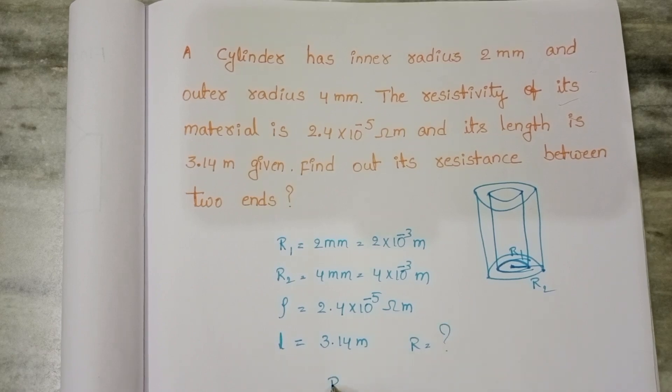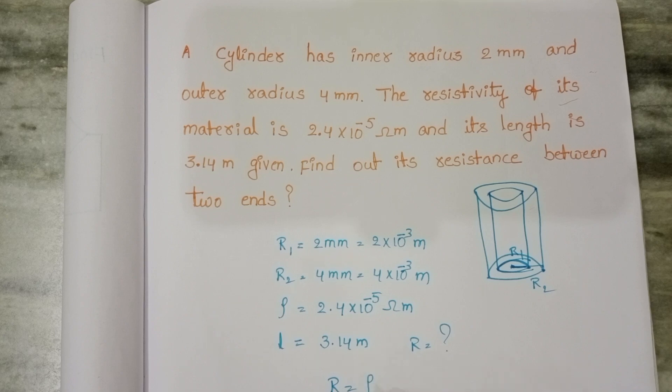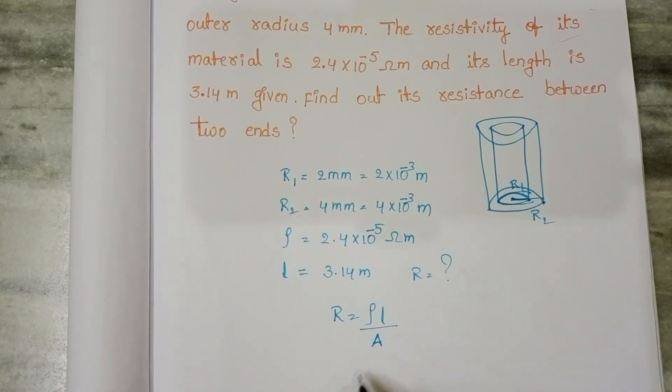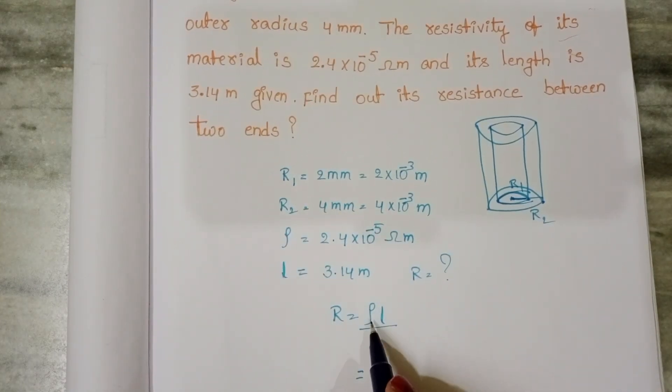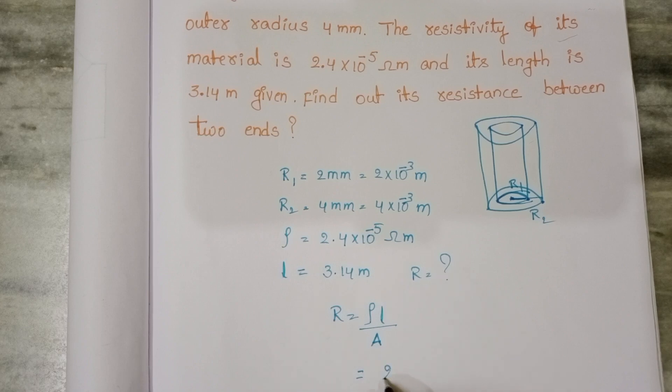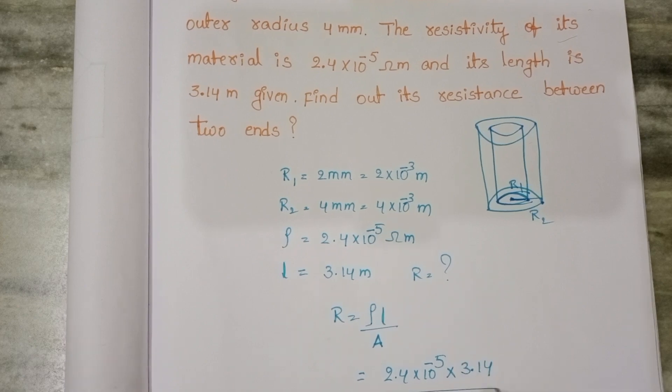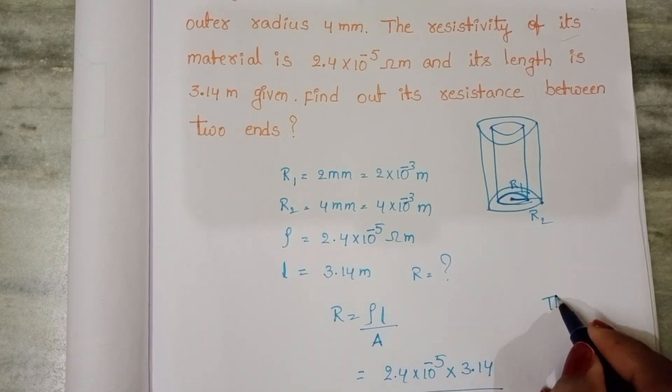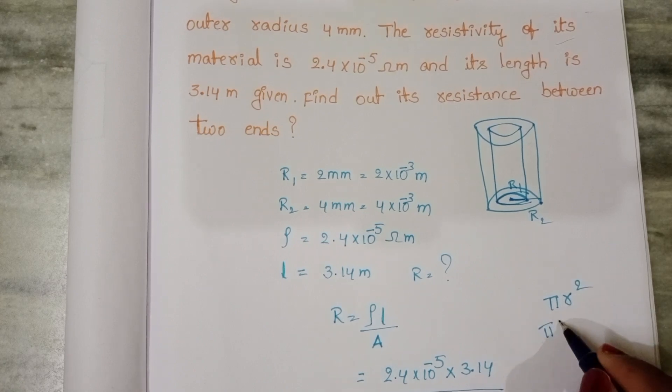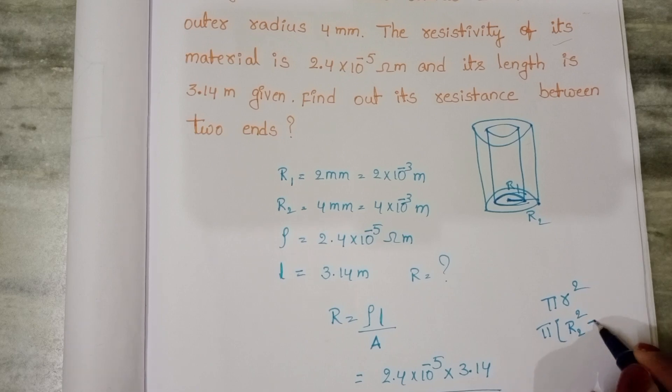We know resistance equals specific resistance times length by area of cross section. Substitute the values: in place of ρ, 2.4 × 10⁻⁵ and length is 3.14. Area formula is π R² in place of R.